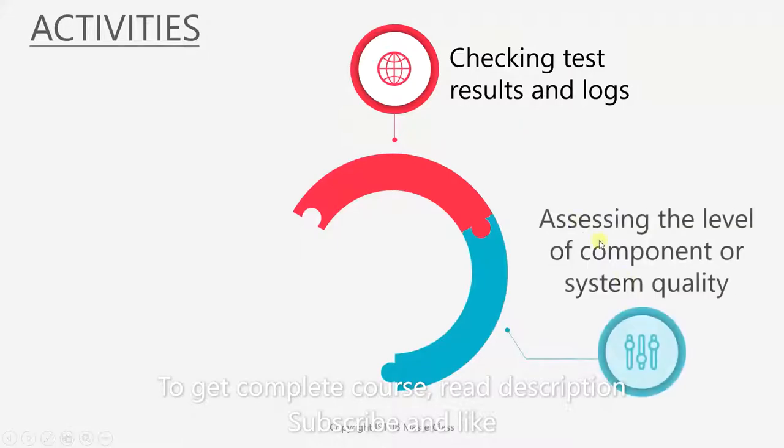The next one is assessing the level of component or system quality. We have to check whether the quality of the system is being maintained. If we find that the quality is lacking, then we go to the planning stage and create a new plan again.